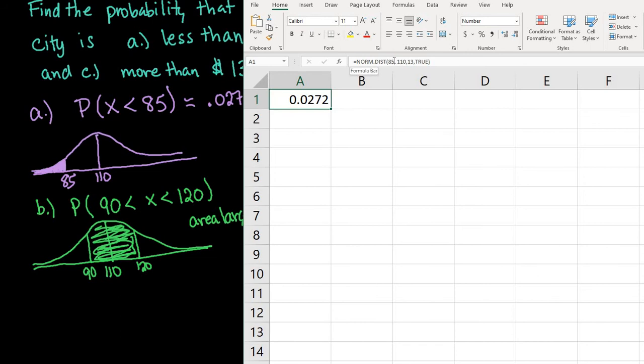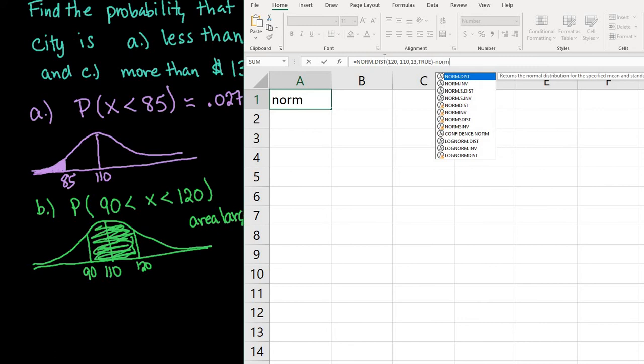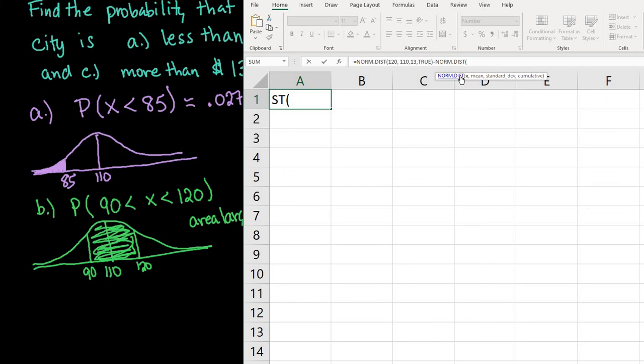Our larger value is 120, so I'll change the x value from 85 to 120, then go to the end of the equation and add minus.